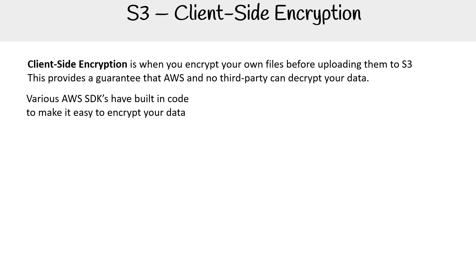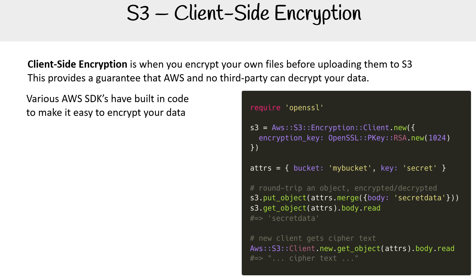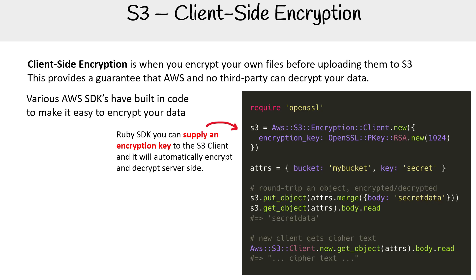There are various AWS SDKs that have built-in code to make it easy to encrypt your data. Here's an example with Ruby — I've looked at all the different SDKs and some are much easier than others. The idea here is that we are requiring OpenSSL. We did something similar before with SSE-C where we used the bash terminal to use OpenSSL to generate a key. So we generate a new key here.